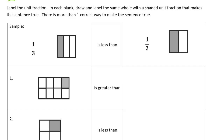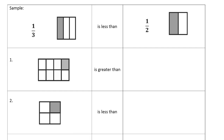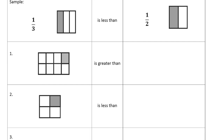There is more than one correct way to make the sentence true. So here we have an example. So one-third, and then we have a picture of one-third, and it's less than, and we need a fraction that's larger.